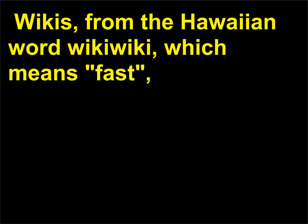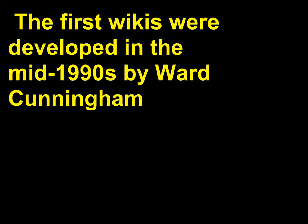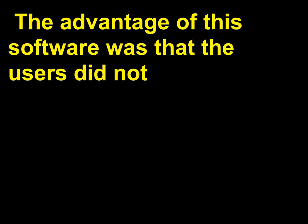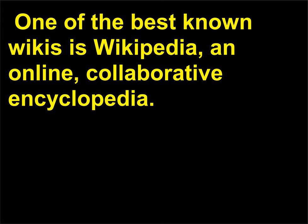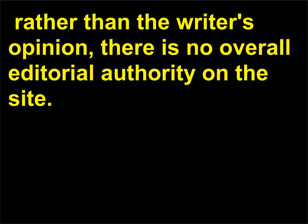Wikis, from the Hawaiian word wiki wiki, which means fast, are web pages that allow users to add and edit material in a collaborative fashion. The first wikis were developed in the mid-1990s by Ward Cunningham (1949) as a way for users to quickly add content to web pages. The advantage of this software was that the users did not need to know complicated languages to add material to the web. One of the best-known wikis is Wikipedia, an online collaborative encyclopedia. Although entries to Wikipedia need to come from published sources and be based on fact rather than the writer's opinion, there is no overall editorial authority on the site.